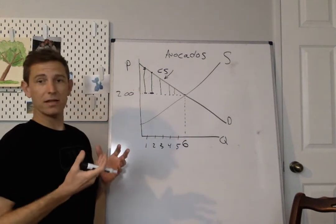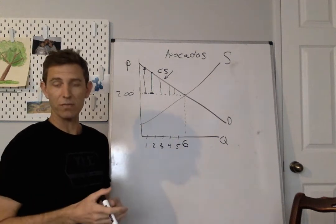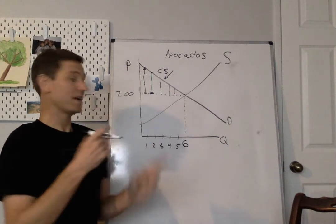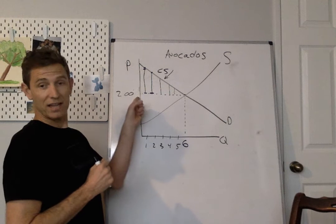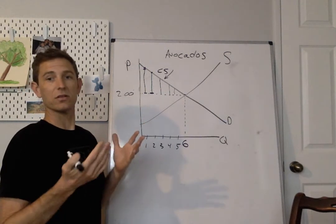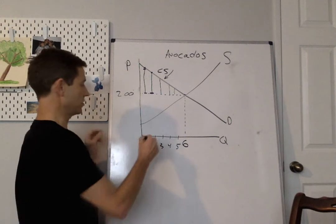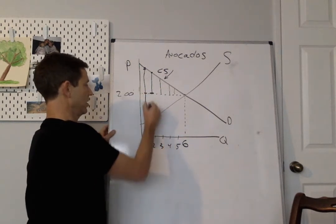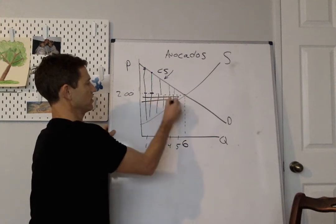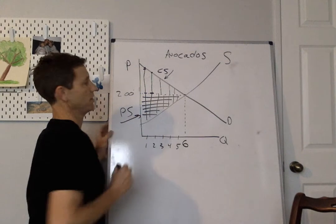What about then the sellers of the good? Well, they get producer surplus like we were talking about before. It's the difference between the price that they get and the lowest that they're willing to take. Now the appropriate things to look at are the price again, that two bucks, and the supply curve, which shows us the lowest price the seller is willing to sell the good for. This is the first, second, third, fourth, and fifth avocados are generating producer surplus represented by this little triangle down in here.